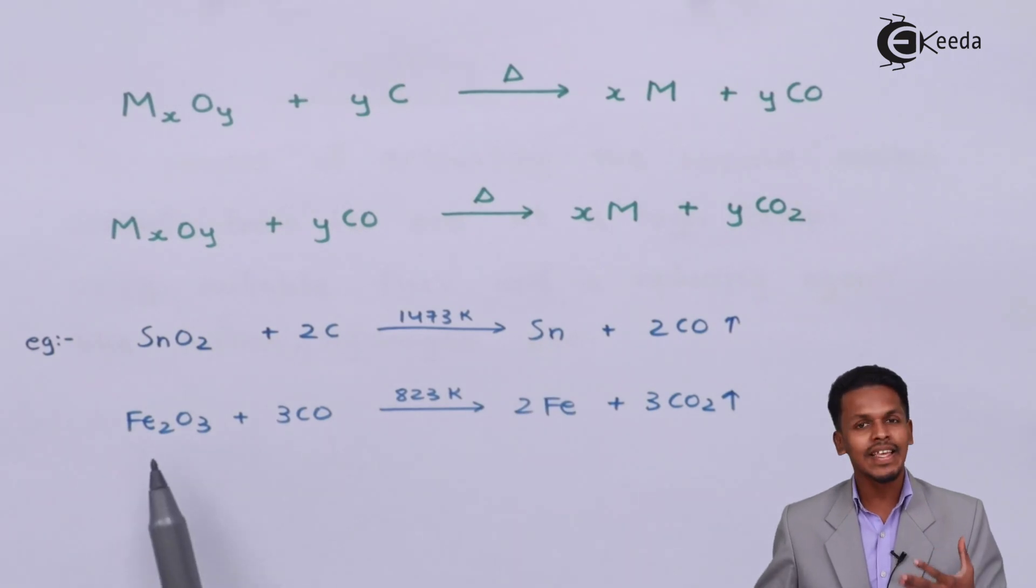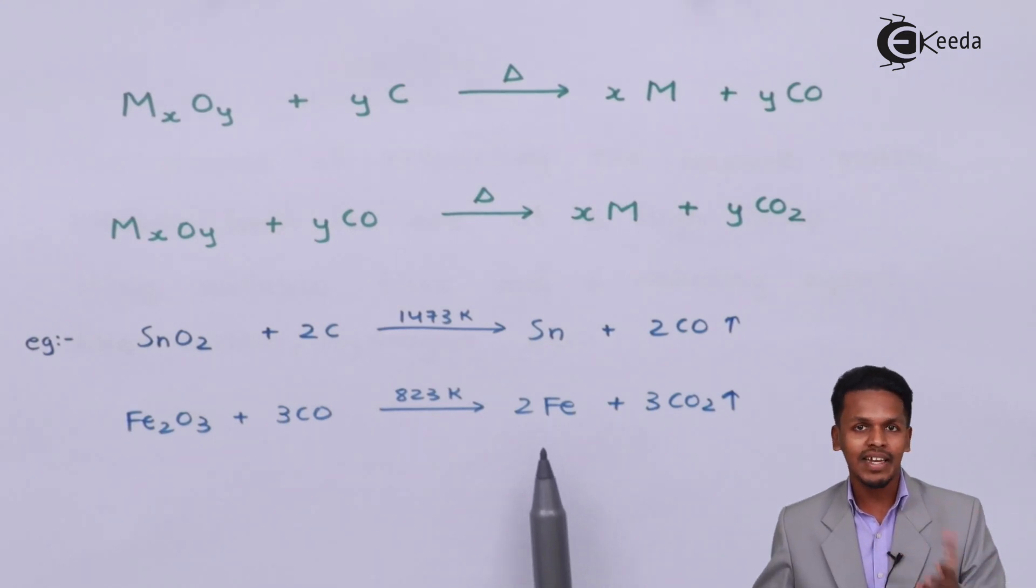In the other example, ferric oxide Fe2O3 is treated with three moles of CO (carbon monoxide), which acts as a reducing agent to reduce the Fe2O3 to form two moles of Fe. This is crude metal, not pure metal - it is metal in a free state.